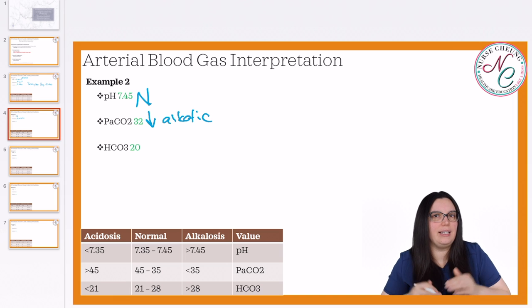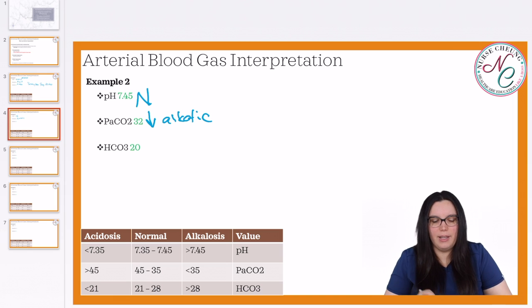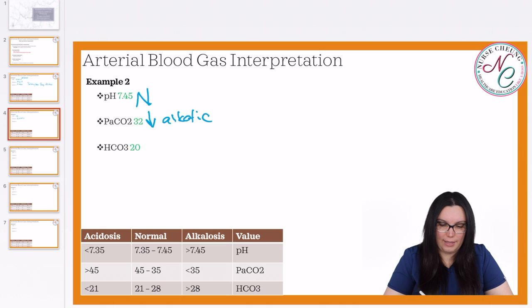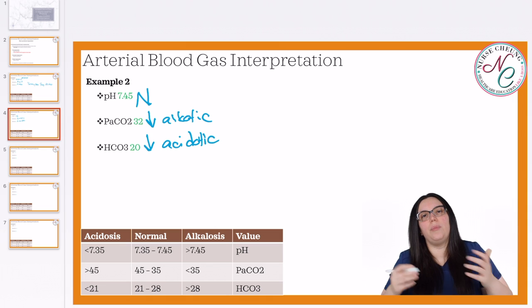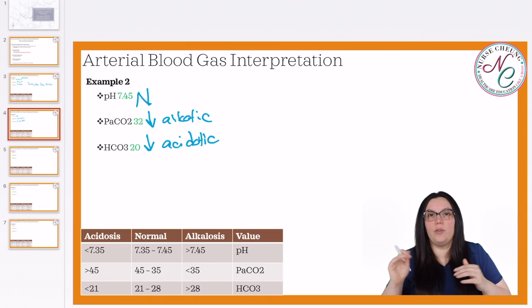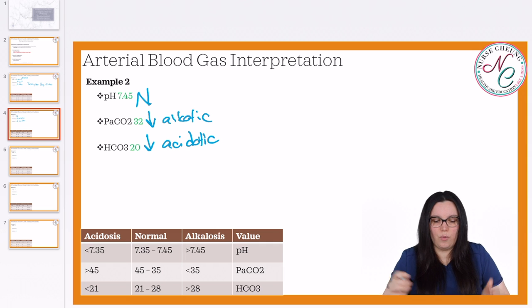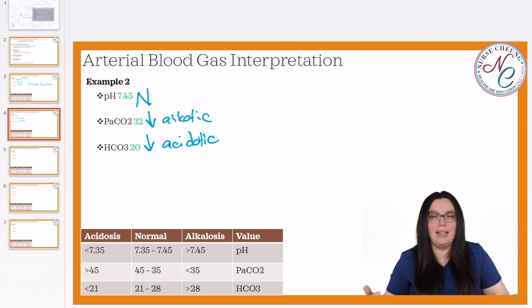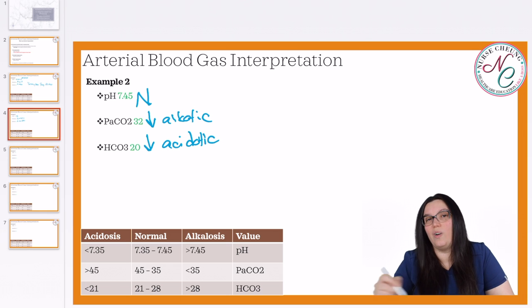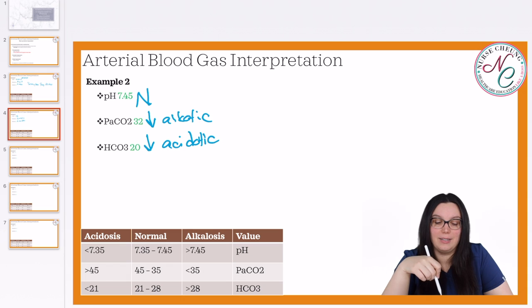We need to take a look at the bicarb. Our bicarb is 20, which is less than 21. So we're going to be in a more acidotic state because our bicarb is our buffer — that is our metabolic component. It's more basic; it's not acidic. When it is low, we don't have enough buffer, making it acidotic. So now we need to determine what kind of ABG this is.